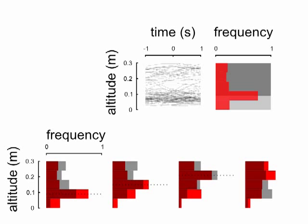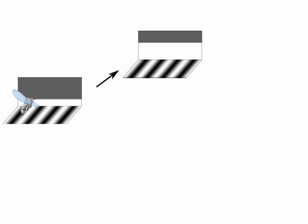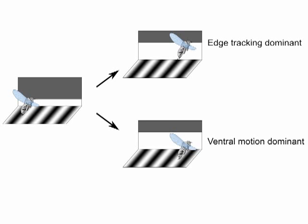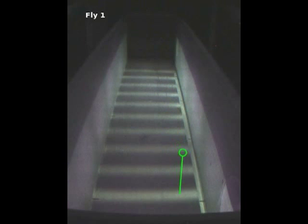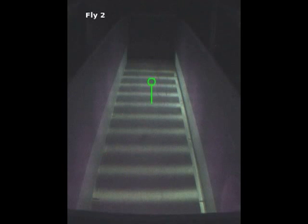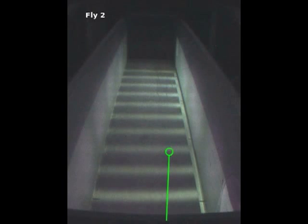To compare the relative importance of the edge tracking reflex to the response predicted by the ventral optic flow regulator, we performed a set of experiments to place the two algorithms in direct conflict. The test was performed by quickly raising or lowering the height of a horizontal edge that a fly was tracking, while simultaneously displaying high contrast sinusoidal gratings on the arena floor. One possibility is that flies may follow the edge to its new height, suggesting that this edge tracking response is dominant. Alternatively, if flies regulated lift solely according to a ventral optic flow regulator model, they should have ignored the lateral stimulus and remained at the same altitude because the visual pattern beneath them did not change. This example shows what we found to be typical: flies follow the height of the edge, showing that edge tracking is sufficient to elicit altitude responses in flies. Furthermore, the relative importance of the ventral optic flow on altitude regulation is low.